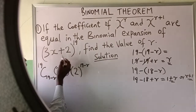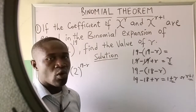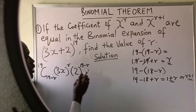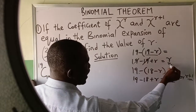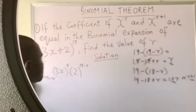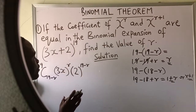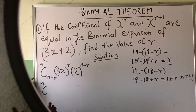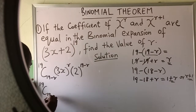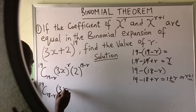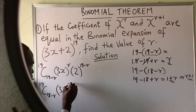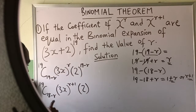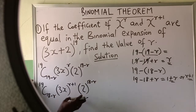For the next term, we write 19 combination 18 minus r, bracket 3x raised to the power r plus 1 — since 19 minus bracket 18 minus r gives r plus 1 — then times 2 raised to the power 18 minus r.